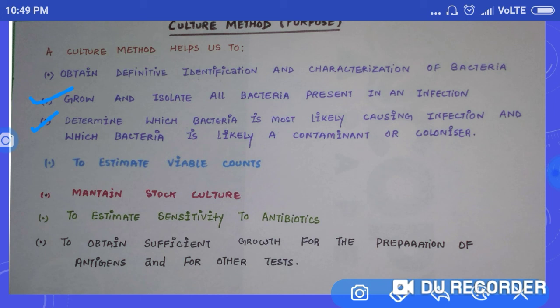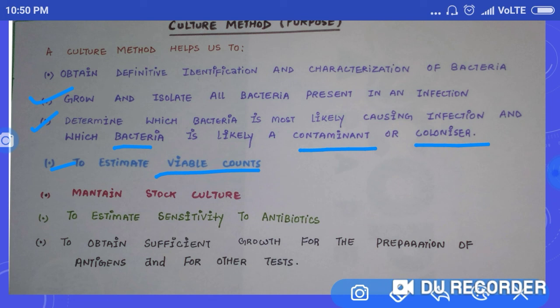Culture method helps us to determine which organism is the cause of a particular infection. It also helps us to determine which bacteria is a contaminant and which bacteria is a colonizer — this distinction is possible because of the culture method. Additionally, it helps us to estimate the viable counts. If we take a specimen, some bacteria may be dead and some alive, and we are able to count them because of culture methods.